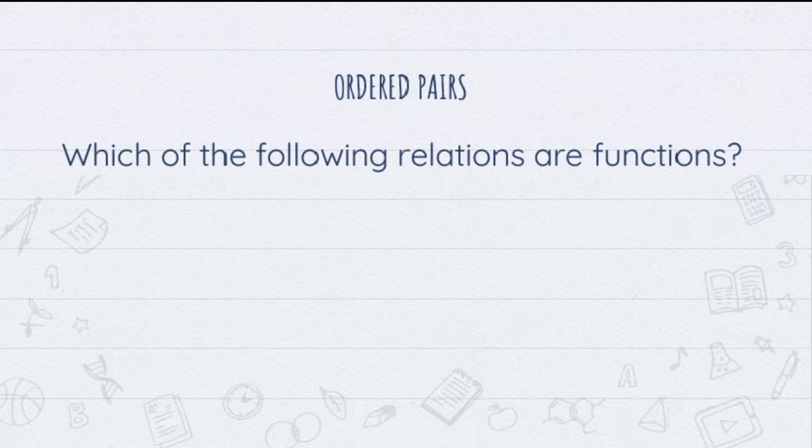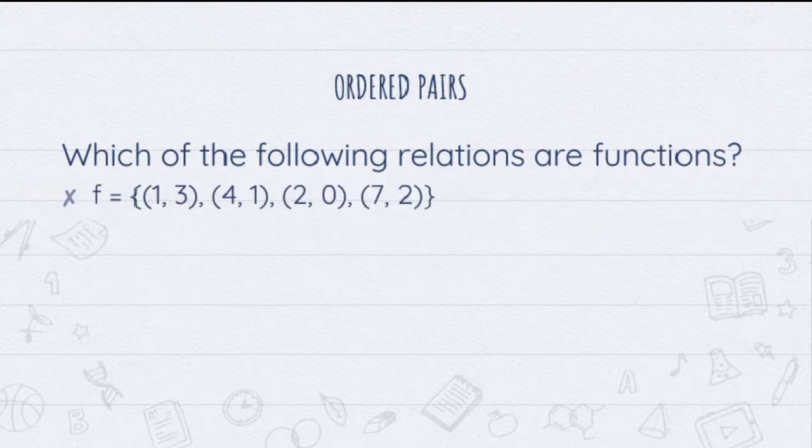Which of the following relations are functions? Always remember that for a relation to be a function, all values of x must be unique or non-repeating, and for every x value, it should only be paired with one y value. We have relation f with ordered pairs (1,3), (4,1), (2,0), (7,2). Inspecting the domain, we have 1, 4, 2, and 7 — all unique and non-repeating. Therefore, this relation is a function.